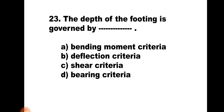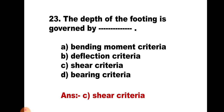Question number 23. The depth of the footing is governed by: A) bending moment criteria, B) deflection criteria, C) shear criteria, or D) bearing criteria. The depth of the footing is calculated for three parameters: bending moment, one-way shear, and two-way shear, and the greatest governs. The depth required for bending moment criteria is always less than that required for shear criteria. Hence the depth of the footing is governed by shear criteria. The correct answer is C, shear criteria.